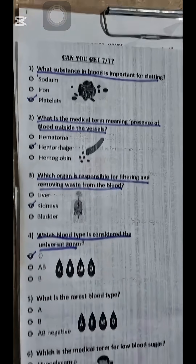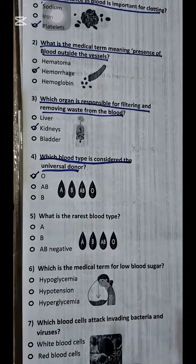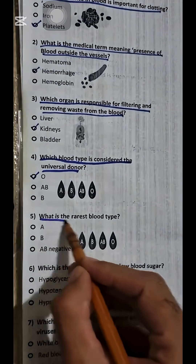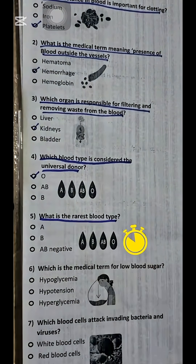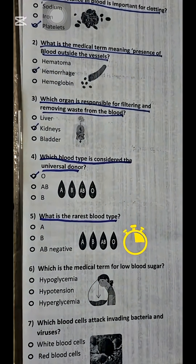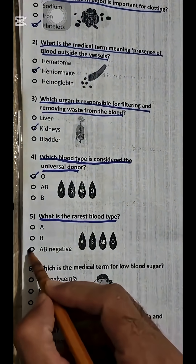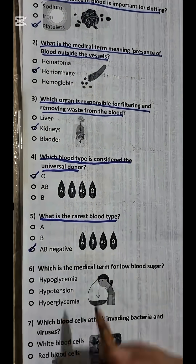Question 5. What is the rarest blood type? AB negative.